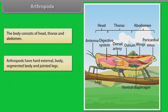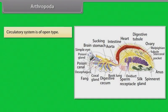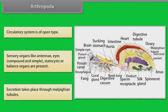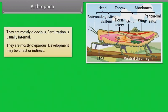Arthropods have a hard external body, segmented body and jointed legs. Respiratory organs are gills, book gills, book lungs or tracheal system. The circulatory system is of open type. Sensory organs like antennae, eyes (compound and simple) and statocysts or balance organs are present. Excretion takes place through Malpighian tubules. They are mostly dioecious; fertilization is usually internal. They are mostly oviparous; development may be direct or indirect.